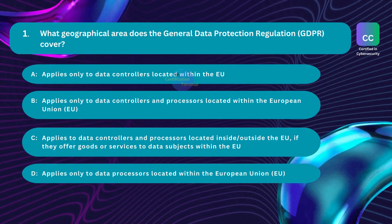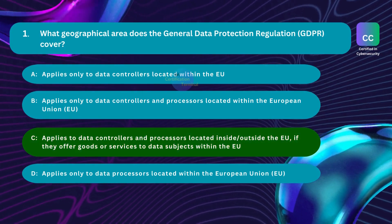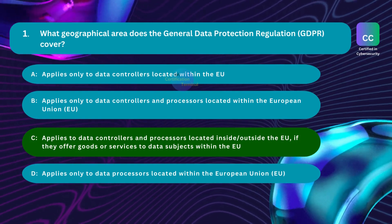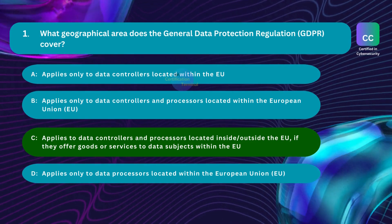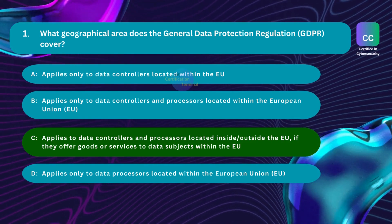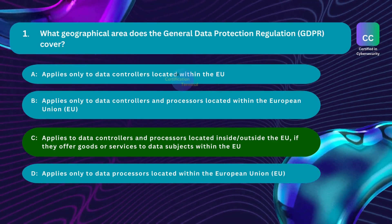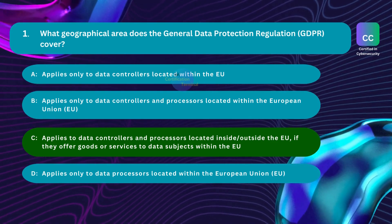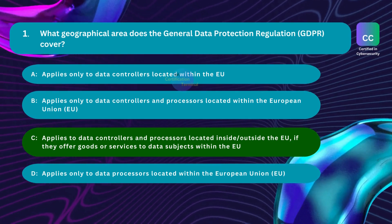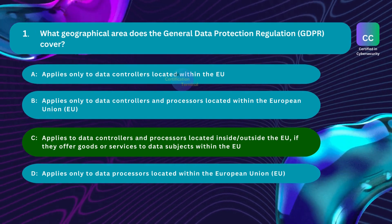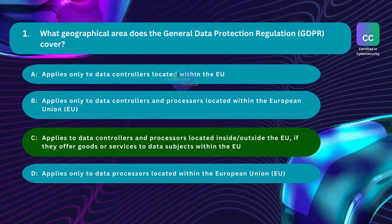The correct answer is Option C: applies to data controllers and processors located inside or outside the EU, if they offer goods or services to data subjects within the European Union. The GDPR applies to data controllers and processors located inside or outside the EU if they offer goods or services to data subjects within the EU. This means organizations that process the personal data of EU citizens, regardless of their location, must comply with the provisions of the General Data Protection Regulation.